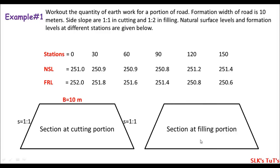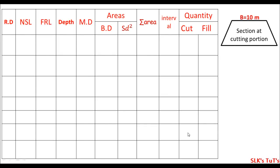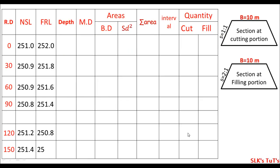Now I'll start the solution. I'll use the given table which was just introduced. I'll draw the section to make the calculation easy — the section in cutting and the section in filling — and I'll fill some columns with the known values. The RDs are given from 0, 30, 60 to 150, and the NSL and formation levels are also given. Just don't worry about the blank row for now. The calculation will start from here.